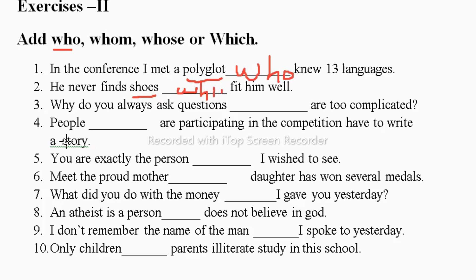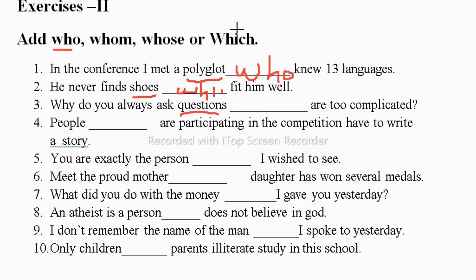Next: Why do you always ask questions — blank — are too complicated? Again, 'question' is the antecedent. The antecedent should be as close as possible to the relative pronoun. We are talking about questions, which are things, so we take 'which' here.